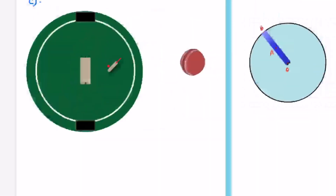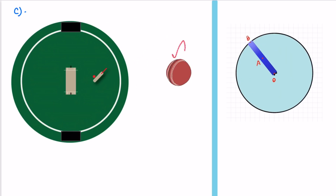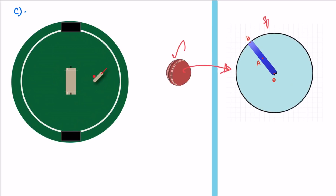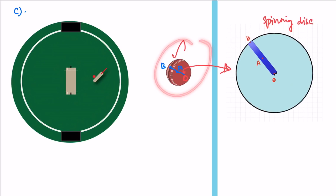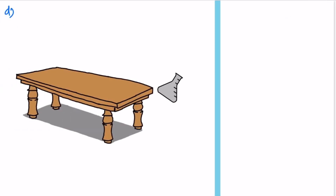Option C: A spinning cricket ball. The bowler spins the ball — one leg spin and one half spin. This is equivalent to a spinning disk, where center point is A and outer point is B. The distances traveled by different points are different, so the velocities are different. Therefore, a spinning cricket ball is not a point object.